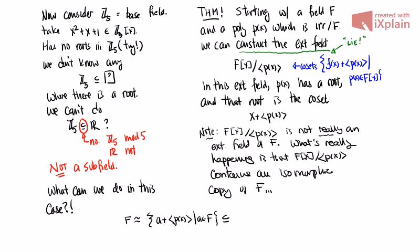The isomorphic copy of F inside this quotient ring is the set of all cosets that look like a + ⟨P(x)⟩, which is isomorphic to F because F is just a bunch of a's and all we're doing is adding the coset representative. So this is honestly, truly, accurately a subfield of the new quotient field — F itself is not a subfield, but this isomorphic copy is. Now let me give an example going back to Q[x] before revisiting the Z₅ example.